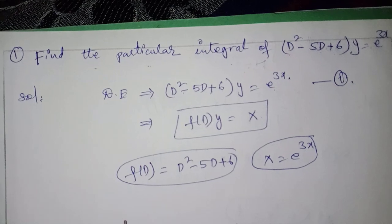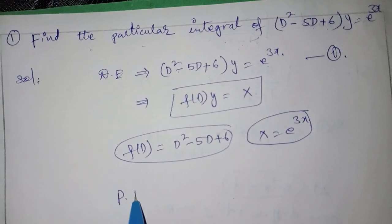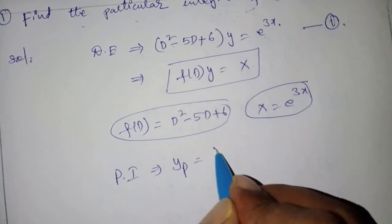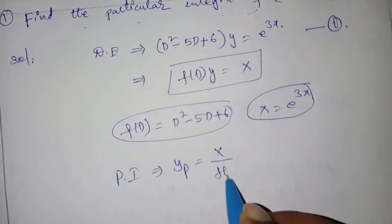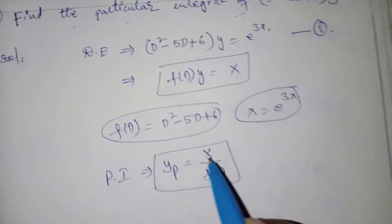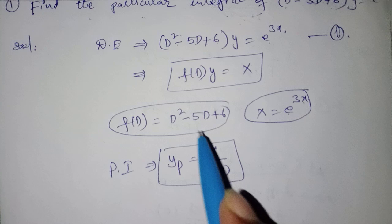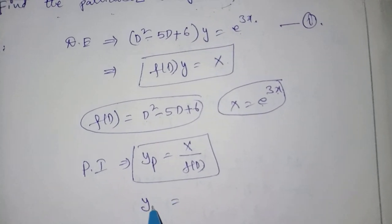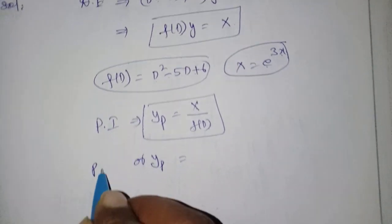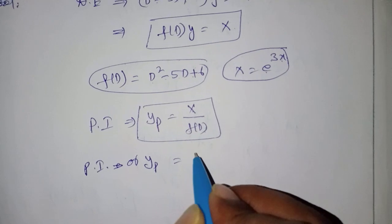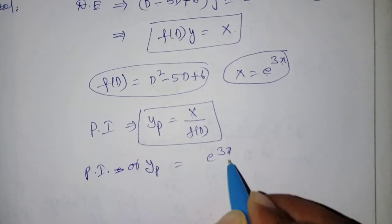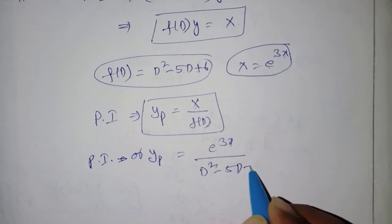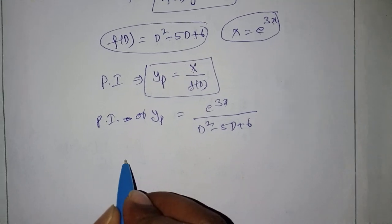We need to find the particular integral. The particular integral, written as PI or yp, is given by the formula yp = X / f(D). Here, X = e^(3x) and f(D) = D² - 5D + 6. So yp = e^(3x) / (D² - 5D + 6).